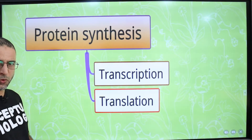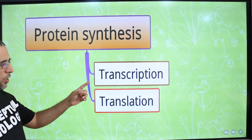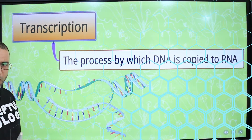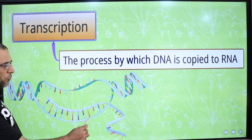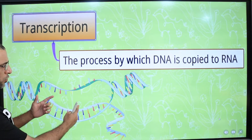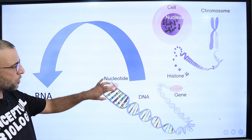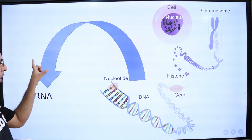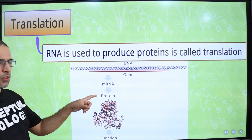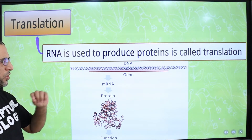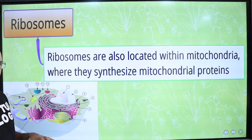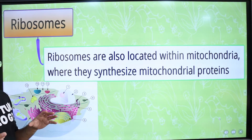Protein synthesis consists of two processes: transcription and translation. Transcription is the synthesis of an mRNA molecule from DNA — the flow of genetic information from DNA to mRNA. Translation is the synthesis of protein from messenger RNA. Ribosomes present in mitochondria and chloroplasts are also involved in protein synthesis.